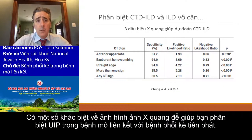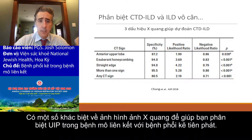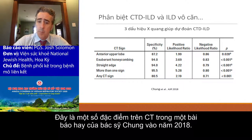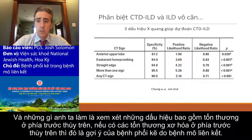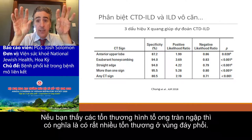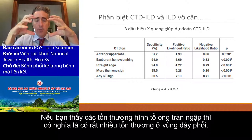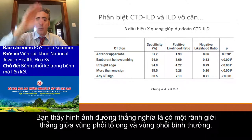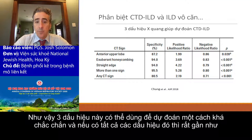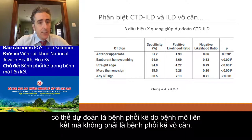These coronal images show that UIP sits in the periphery and the basilar portion of the lungs. Sometimes this fibrosis will be along the basilar part of the lungs and creep up the side. There are some radiographic differences to help you distinguish UIP associated with connective tissue disease versus idiopathic, from a nice paper in 2018 by Dr. Chung. The signs include anterior upper lobe signs — fibrosis in the anterior upper lobe suggesting connective tissue related ILD — exuberant honeycombing in the bases, and a straight edge where there's a straight demarcation between honeycombing and normal lung. If you have all those signs, it's quite predictive that this is connective tissue related ILD and not an idiopathic ILD.